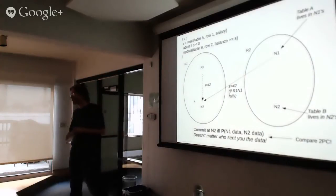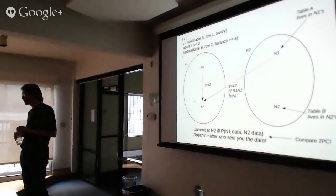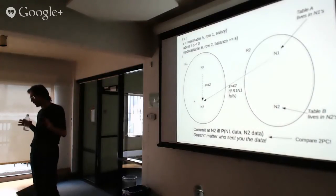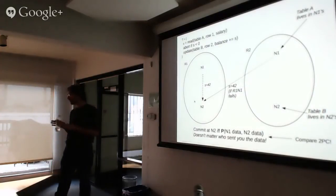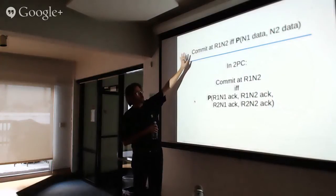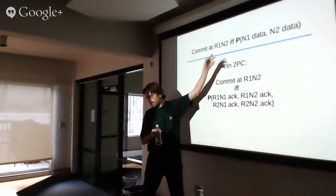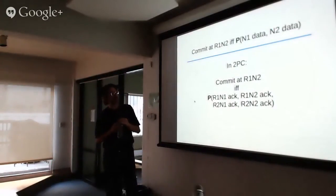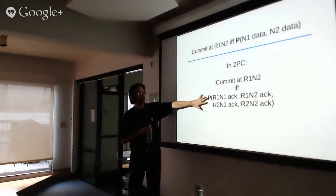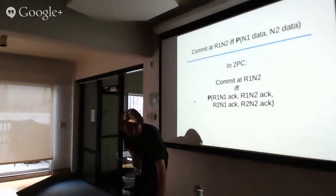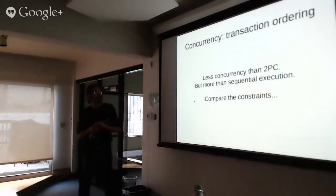Because transactions are deterministic, every node receiving the same read and write set executes read, execute, write the same way. In Calvin, we can commit successfully at a node if some predicate in the data — in this case, salary greater than zero — is true. But in two-phase commit, we have to check a predicate of all four nodes: commit only if all four nodes have ACKed the commit. So it's dependent on getting data across more links.